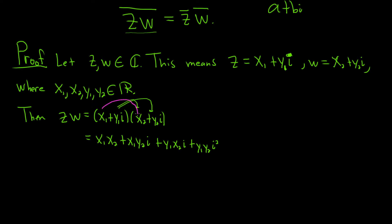So, x1 times x2, that gives us the first piece. x1 times y2i gives us the second piece. y1i times x2, that's the third piece. And then, the last piece is y1y2i squared. i squared is negative 1. Let's go ahead and rewrite this as x1x2. This one's going to become a negative 1 here. So, minus y1y2. Then, we can pull out an i from these. So, plus i times x1y2 plus y1x2. So, this is zw.